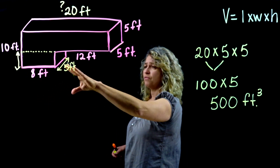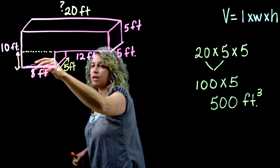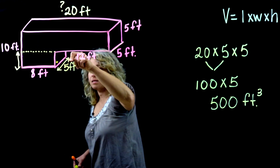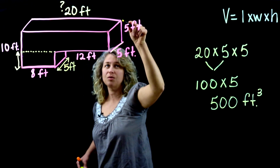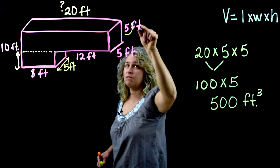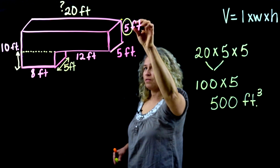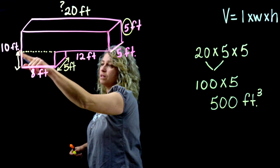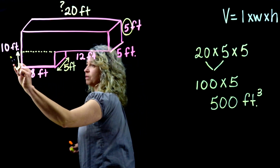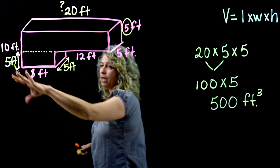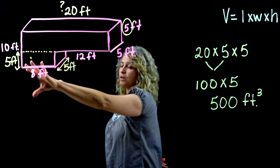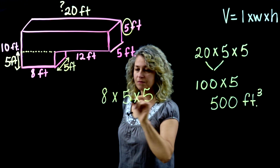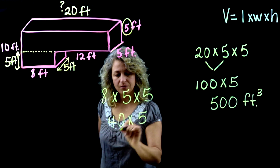Now we have 8 and 5 for the lower shape. To find the height, we look for vertical lines elsewhere on the figure. The total vertical dimension is 10, and the top shape's height is 5, so 10 minus 5 equals 5. With all three dimensions — 8, 5, and 5 — we can find the volume: 8 times 5 is 40, and 40 times 5 is 200 cubic feet.